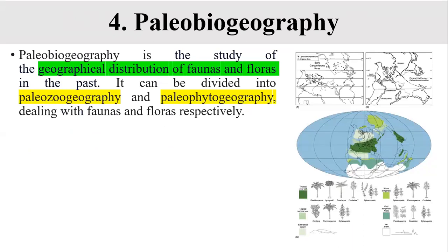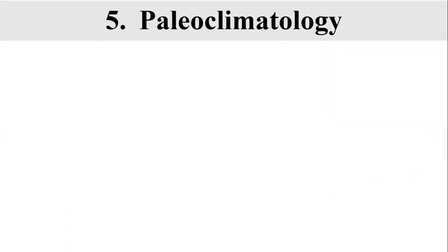Paleobiogeography describes the distribution of different animals and plants in different regions of the Earth. When studying the distribution of different plants, it is called paleophytogeography. When studying the distribution of animals in different regions of the world, it is called paleozoogeography. It enables us to find the Earth's history of different plants and animals to better understand what organisms were present in the past, which are present now, and what changes occurred between the present and past eras.